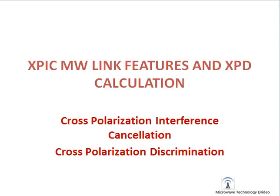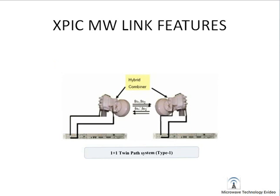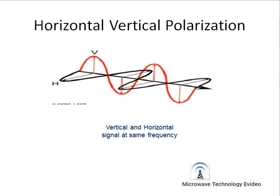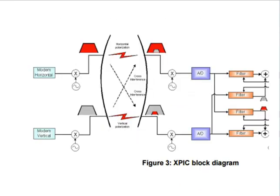Today we are discussing XPIC microlink features and XPD calculation. XPIC means Cross Polarization Interference Cancellation. In microwave, we normally transmit using horizontal or vertical polarization, but in an XPIC link we transmit dual HTM1 — two HTM1 streams — by using both horizontal and vertical polarization of the antenna. For this, we need a dual polarization antenna.